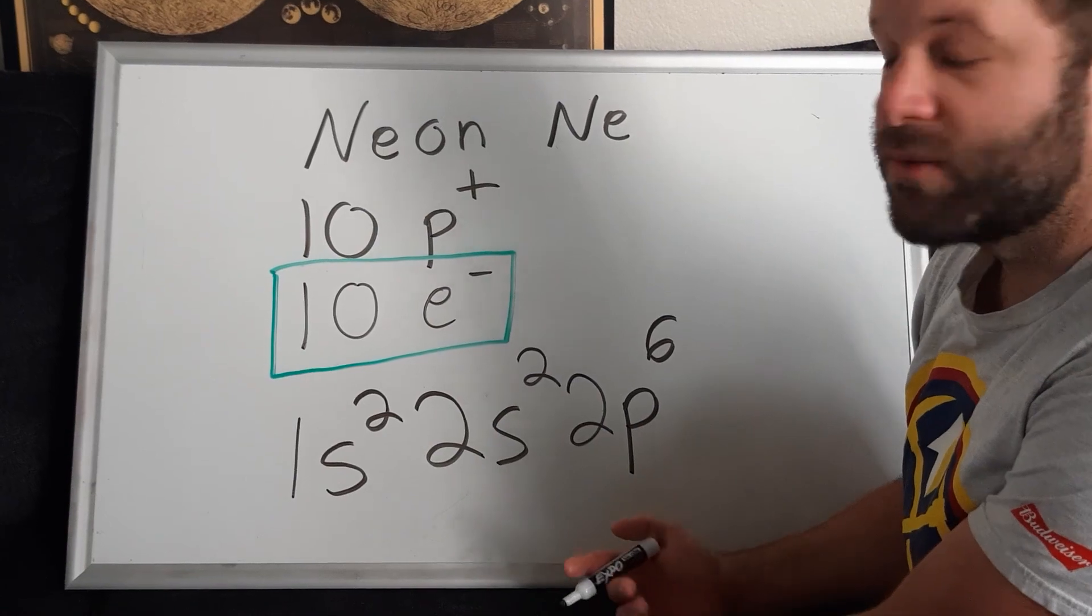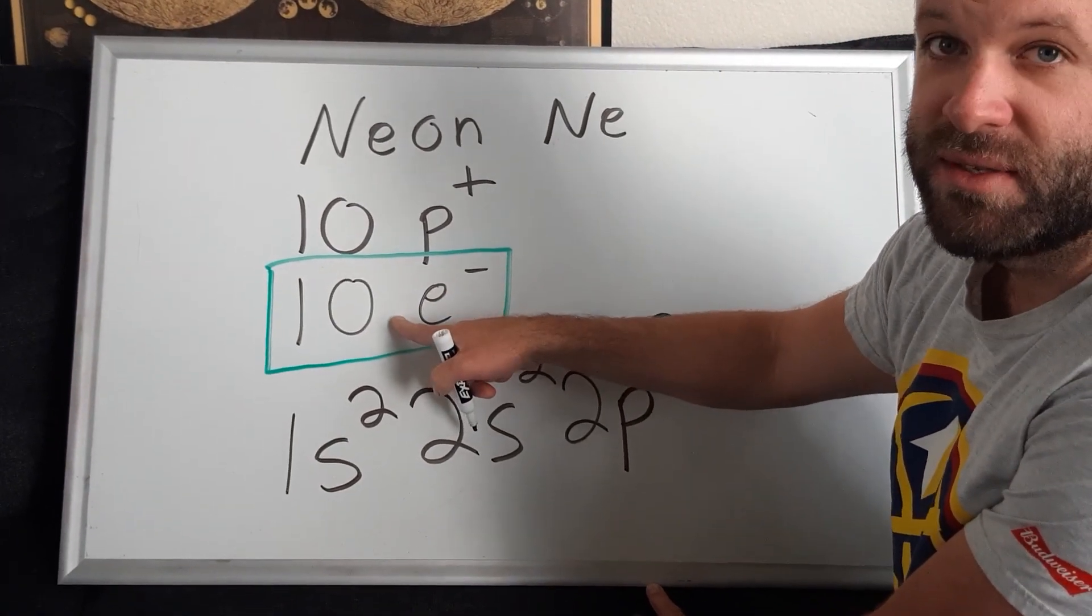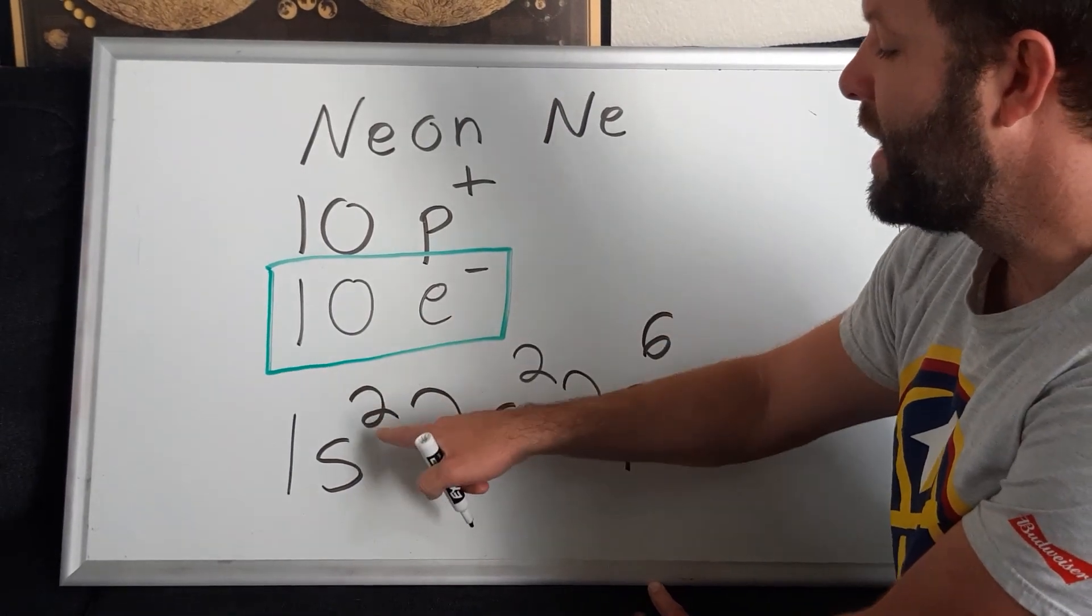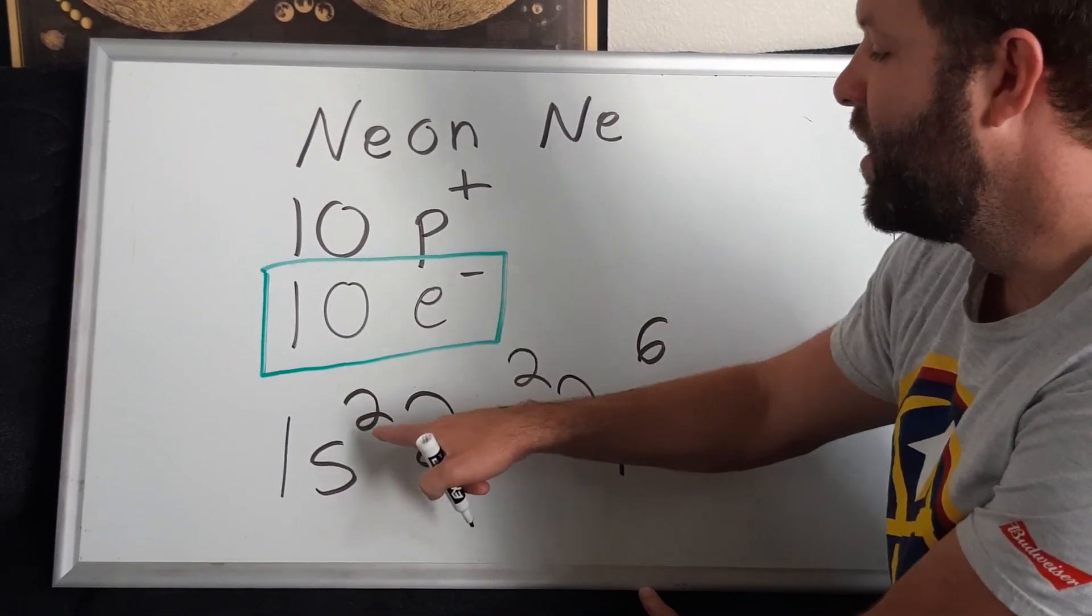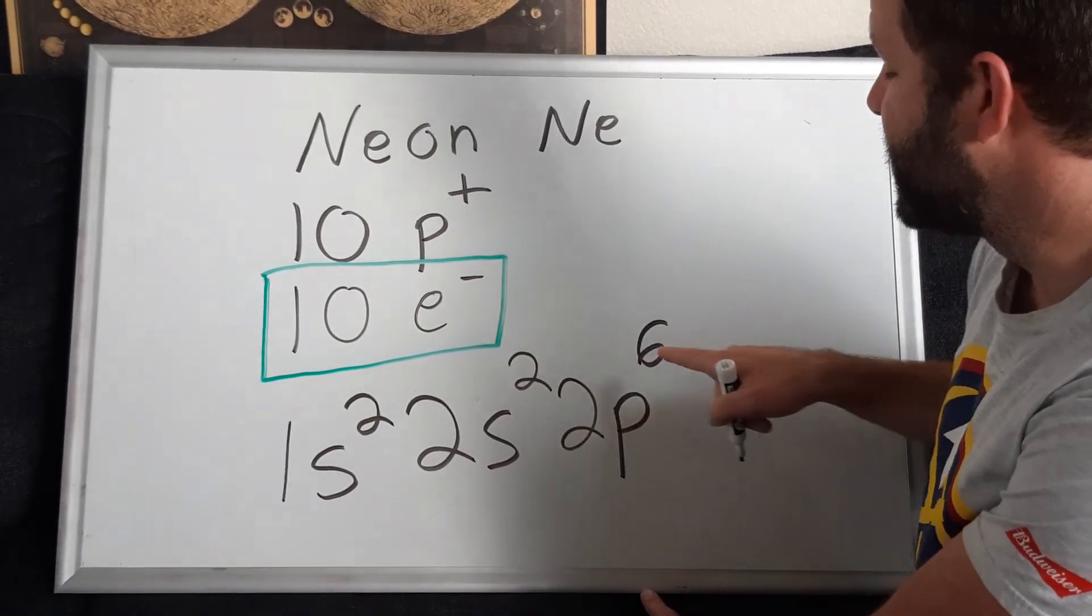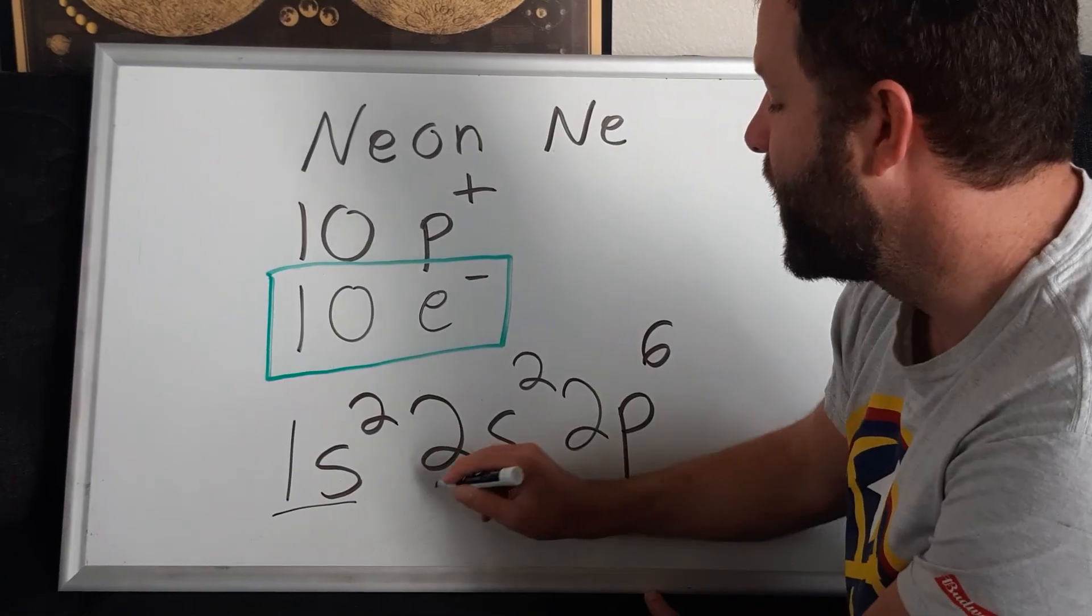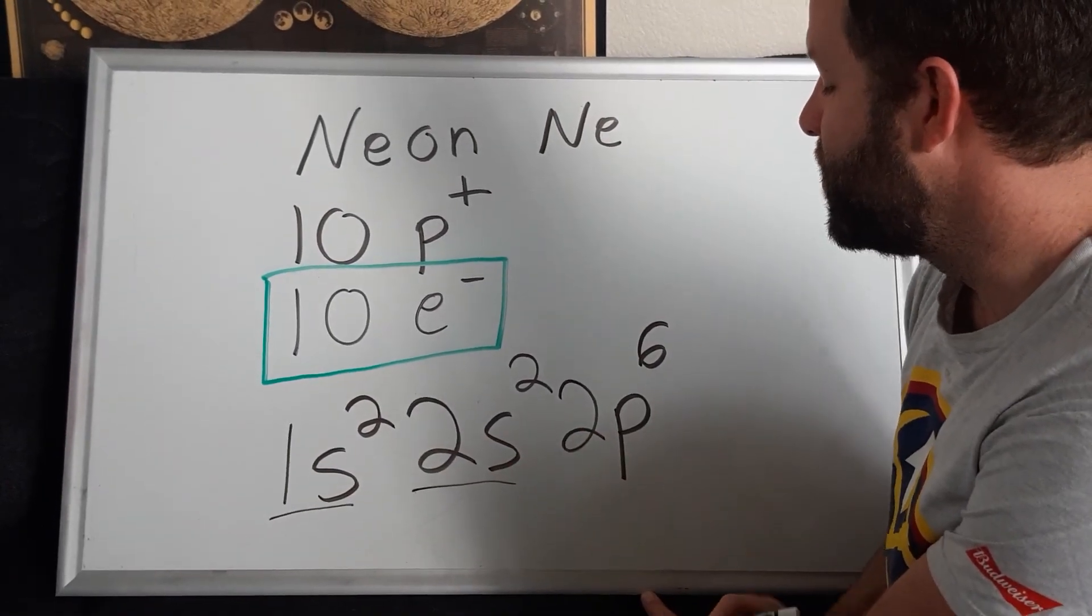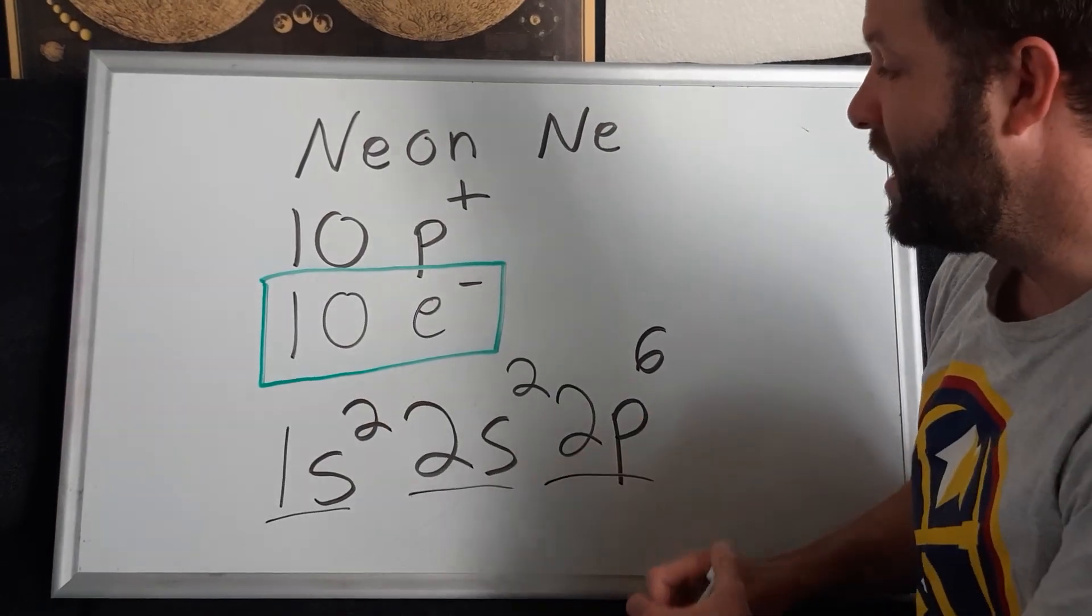How can I check if this is correct? Well, I know that a neutral atom of neon has 10 electrons. We said that by adding up all these superscripts, you get the total number of electrons. 2 plus 2 is 4, plus 6 is 10 electrons. And we have two electrons in the 1s, two electrons in the 2s, six electrons in the 2p.